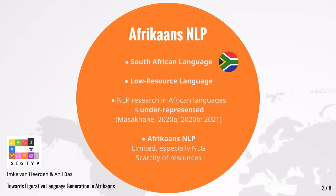The Afrikaans language is mostly spoken in Southern Africa, and is one of South Africa's 11 official languages. Masakhane shows that NLP research in African languages is underrepresented, and this is true of Afrikaans as well. Although some studies and data sets are available, text generation in Afrikaans is very limited.